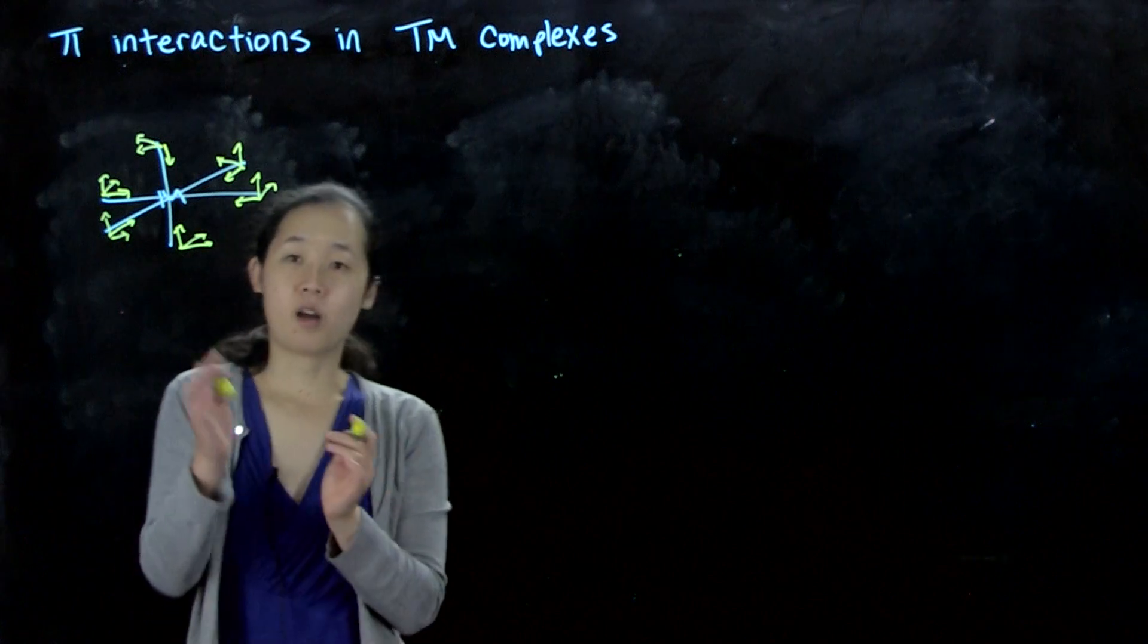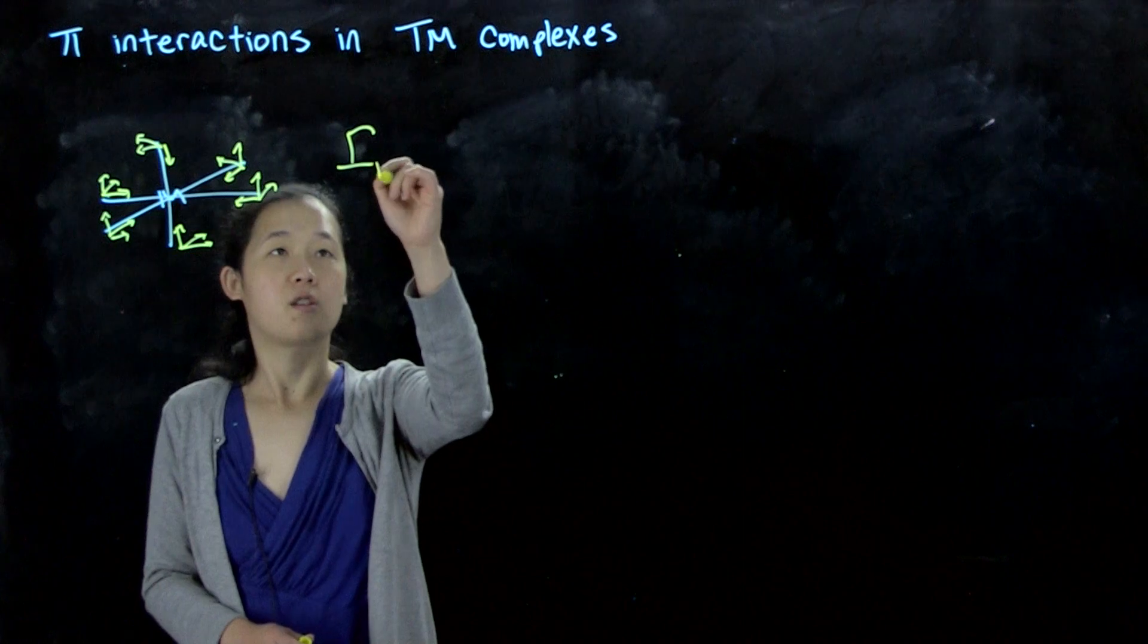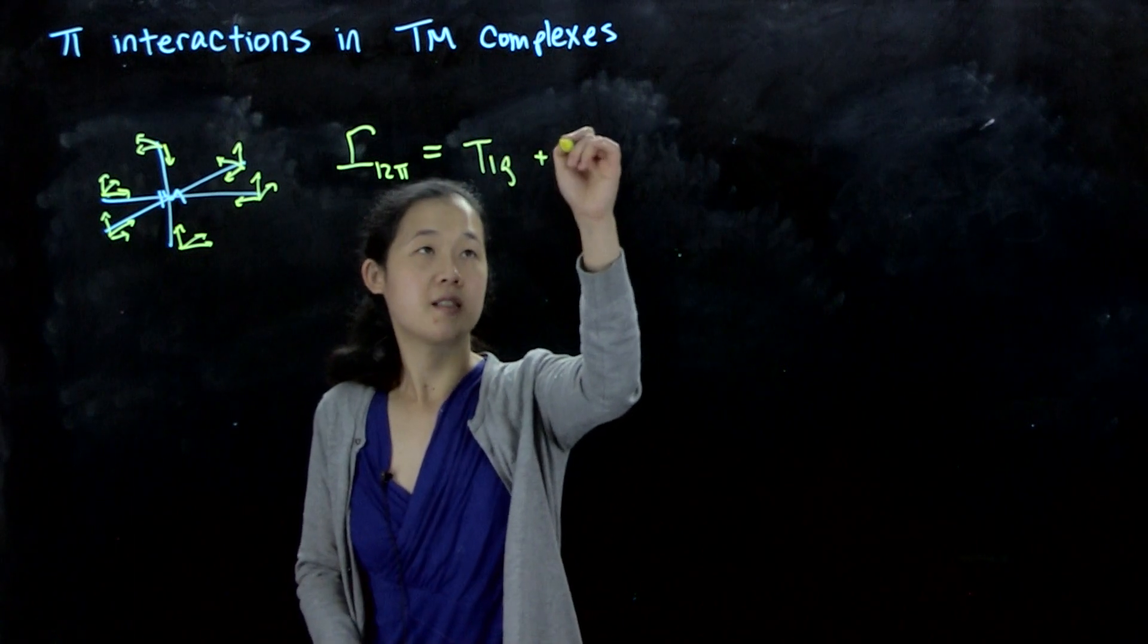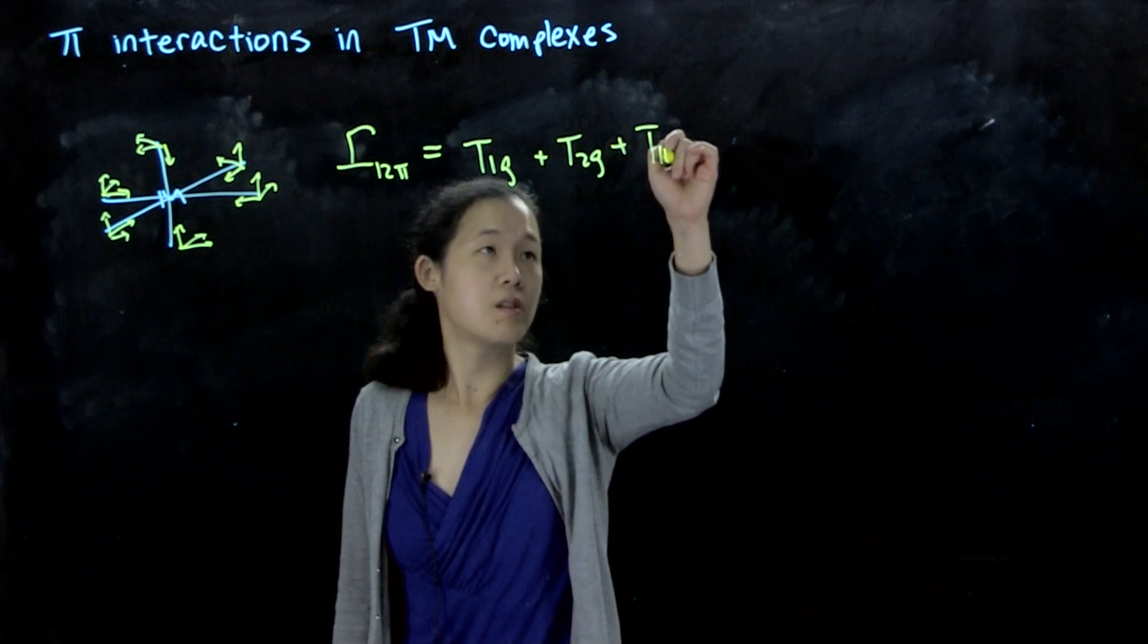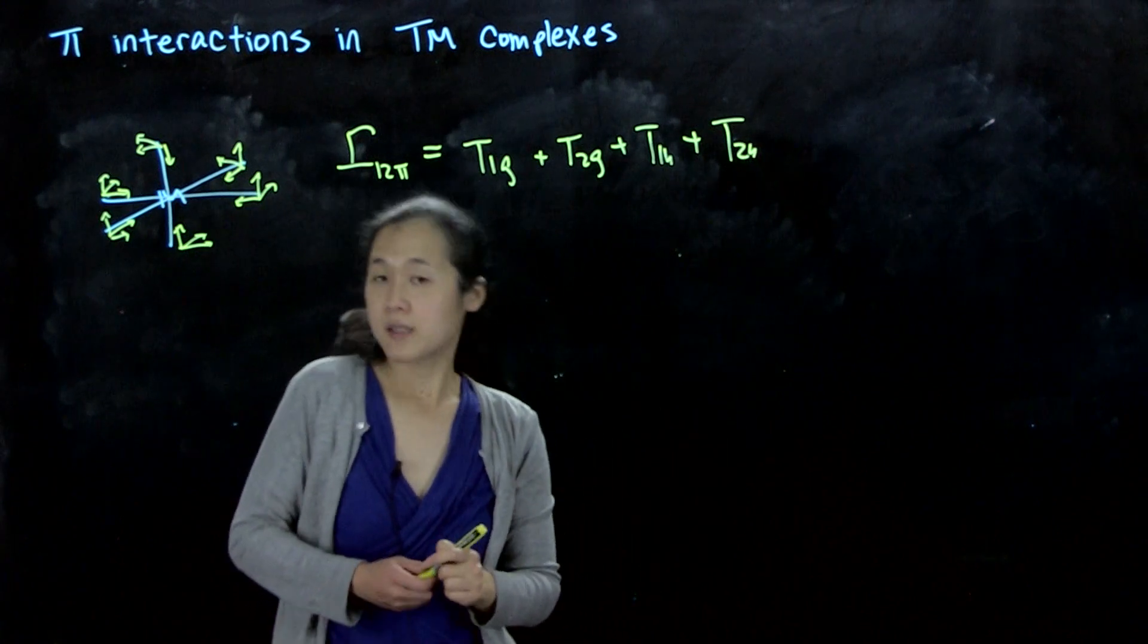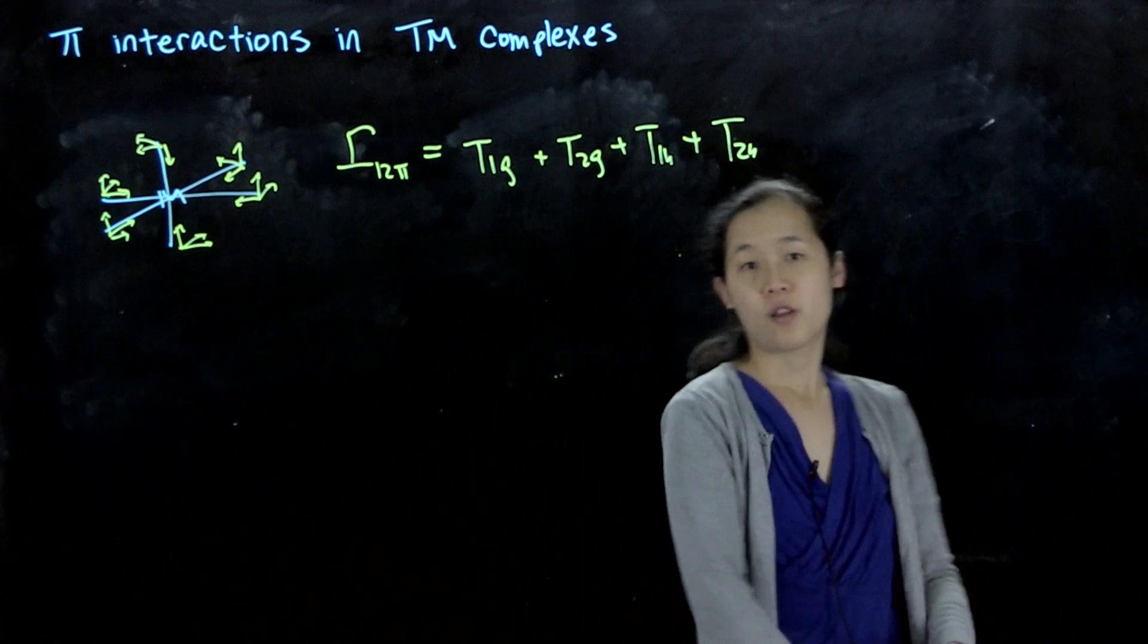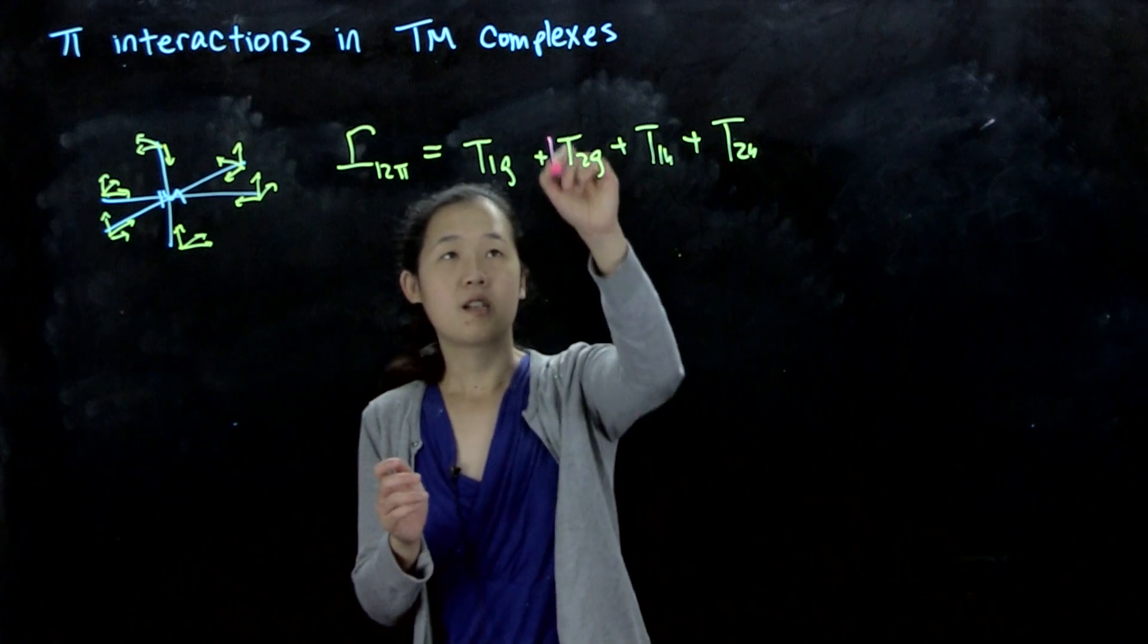Without derivation, you guys could do that on your own, but if you think about our reduced representation for our 12 pi-symmetry orbitals, this should reduce down to T1G + T2G + T1U + T2U. So you should be able to generate SALCs of all the pi-symmetry orbitals of our ligands. These are all those. But the key point is that if you think about interactions with our metal, the only one that matters for the d orbitals are the T2G.